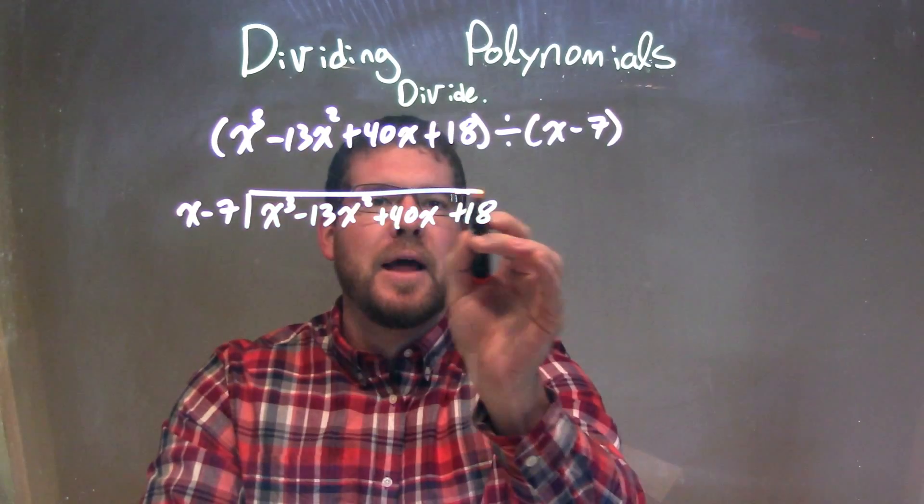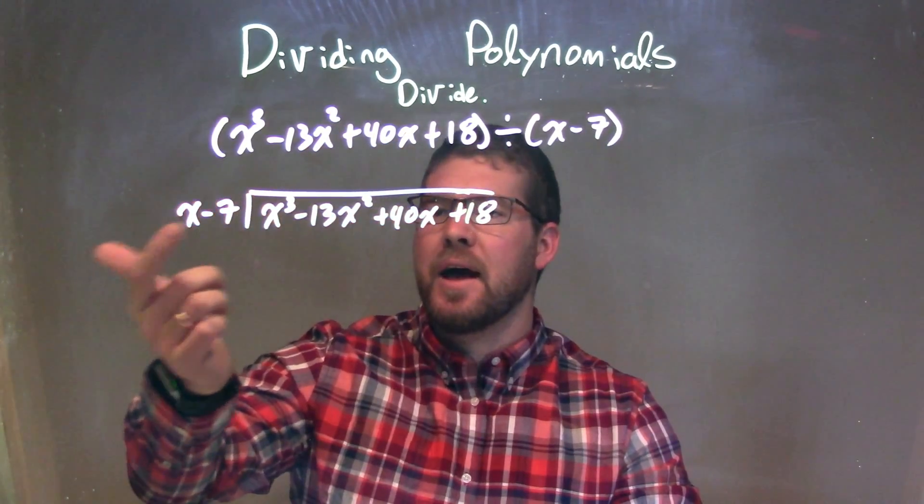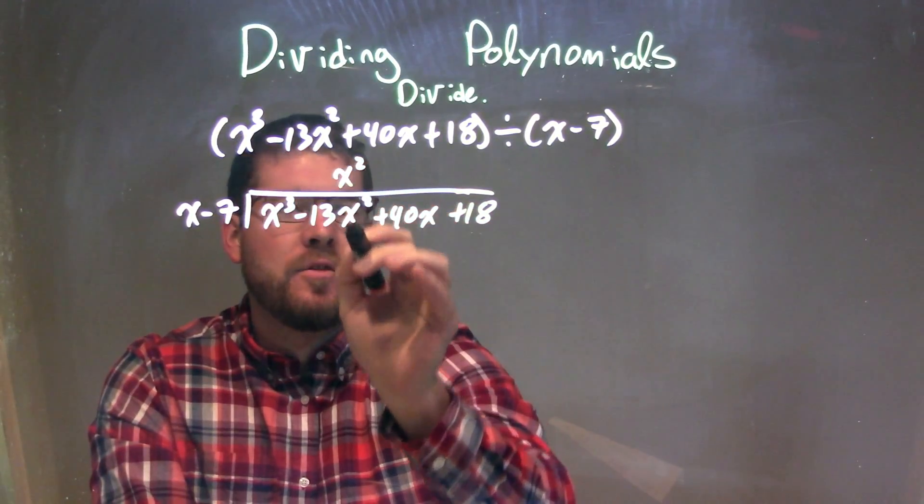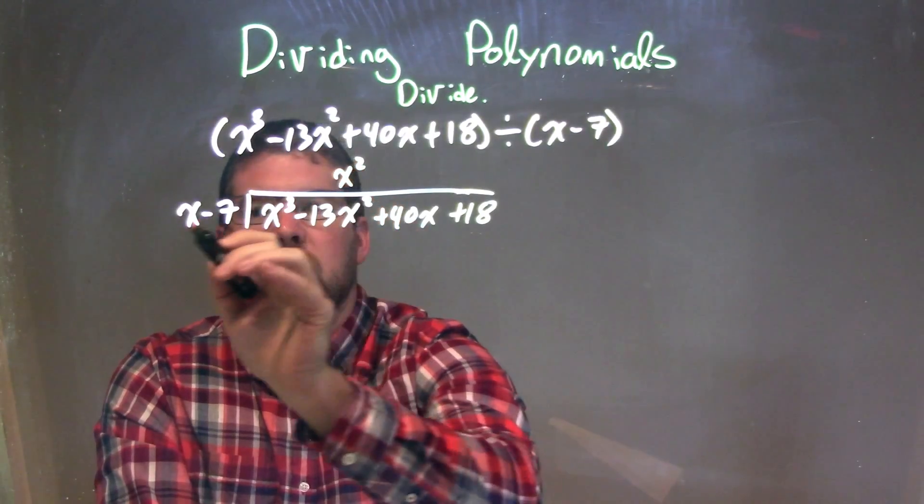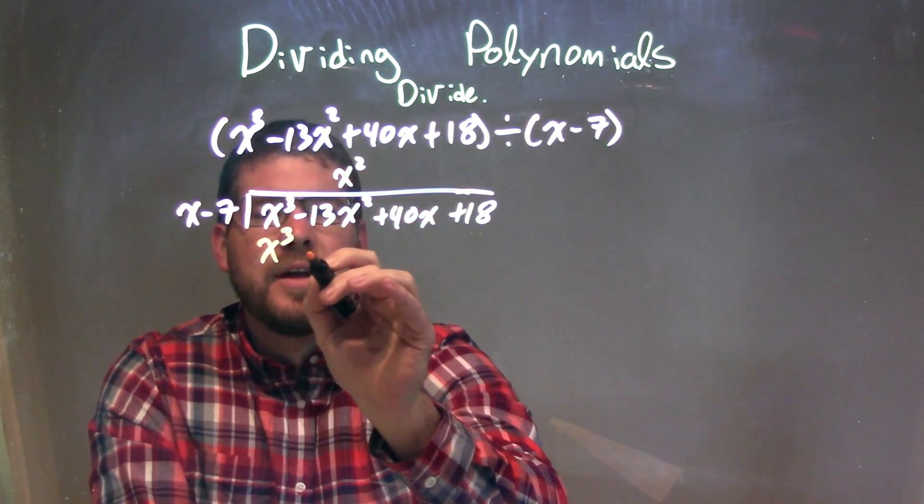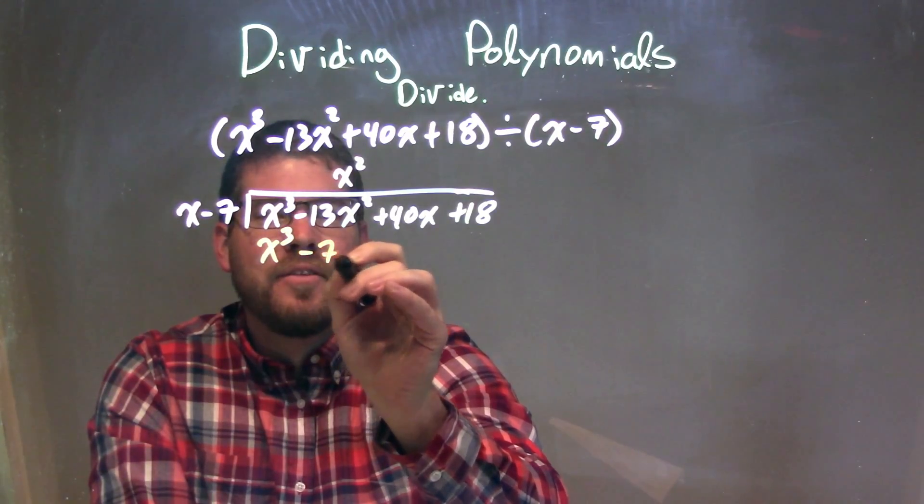Now I'm going to ask the question: what times x gives me x to the third? Simple, that's just x squared. So I put x squared over the x squared value here, keep it all in line. x squared times x is x to the third, and then multiply x squared by the minus 7 and get minus 7x squared.